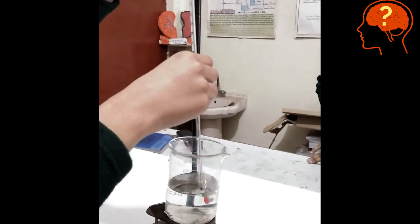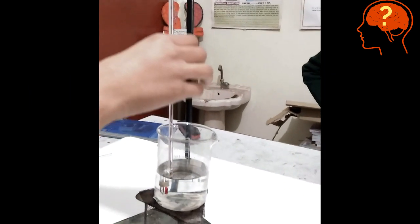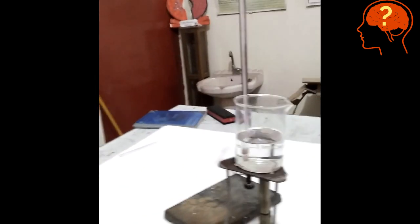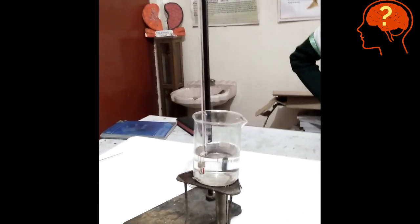Now place the thermometer having fusion tube in a beaker containing water. It should not touch the sides and it should not touch the bottom of the beaker. And the top of the fusion tube should be outside the water.